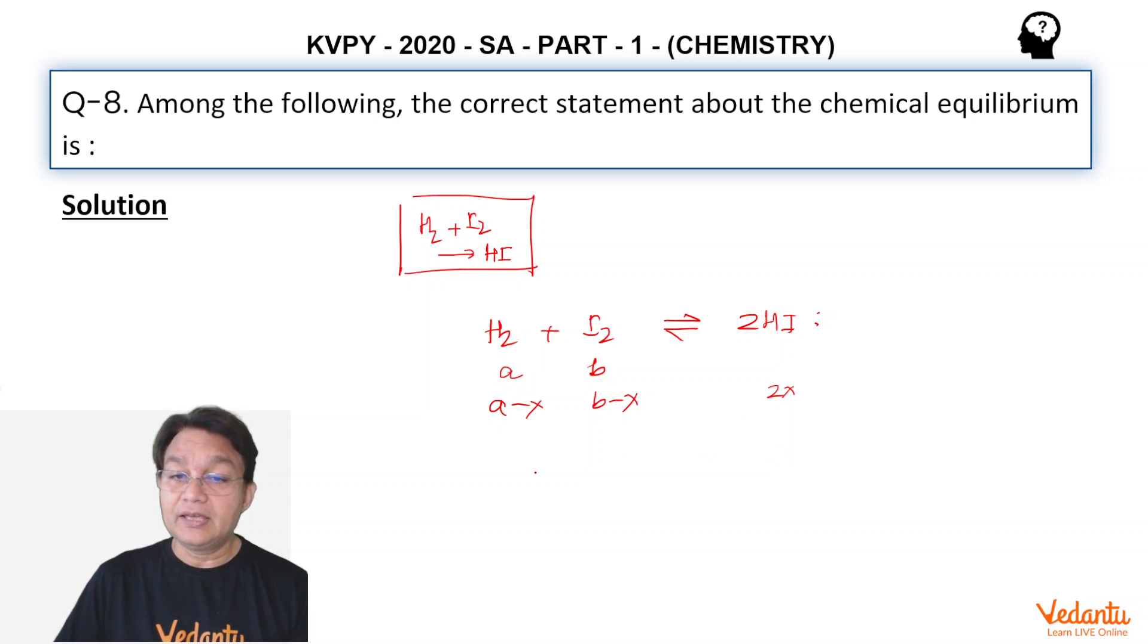But if you start with HI, suppose we don't have A and B, we have C moles of HI is there. So of course, C minus X like this. That will be X by 2. That will be X by 2. So equilibrium can attain from both the sides.